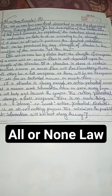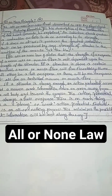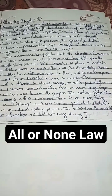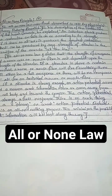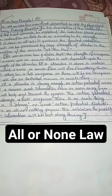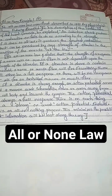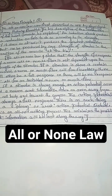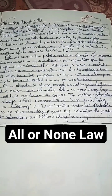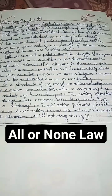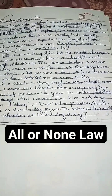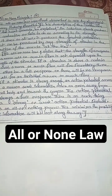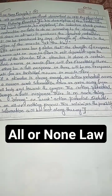All or none principle. The all or none law was first described in 1871 by physiologist Henry Pickering Bowditch. The all or none law states that the strength of a response of a nerve cell or muscle fiber is not dependent upon the strength of the stimulus.